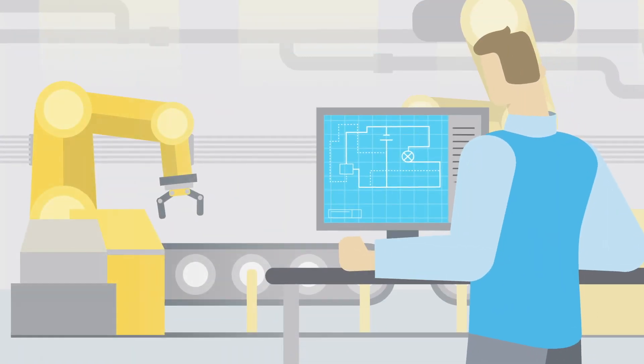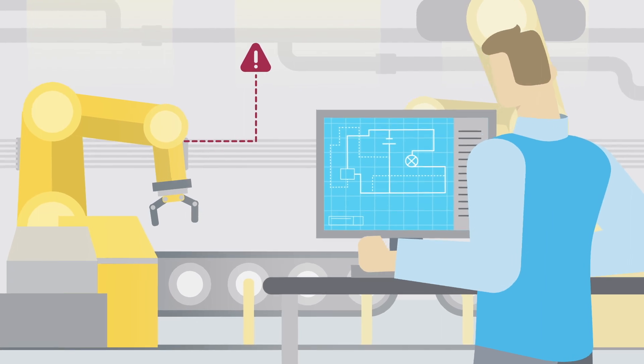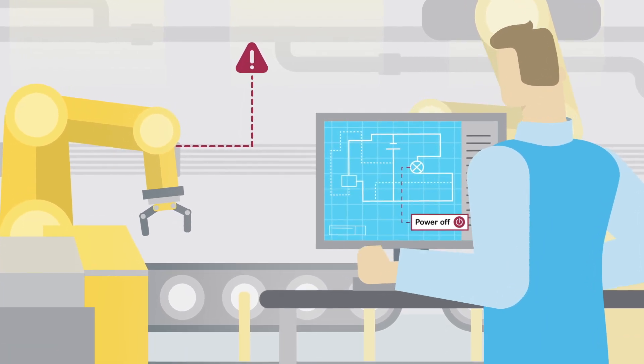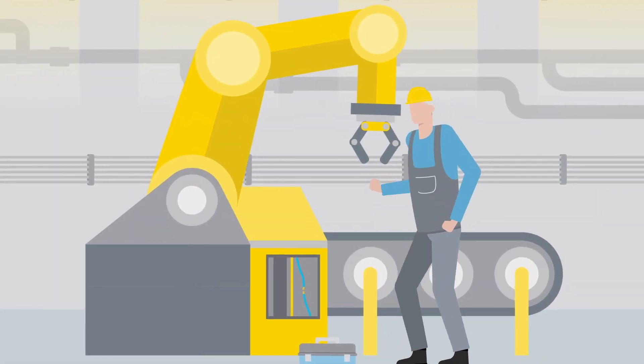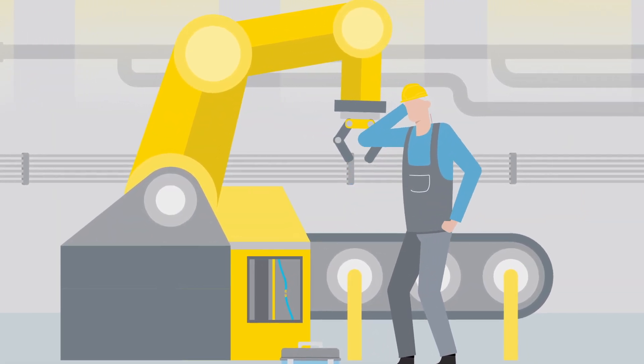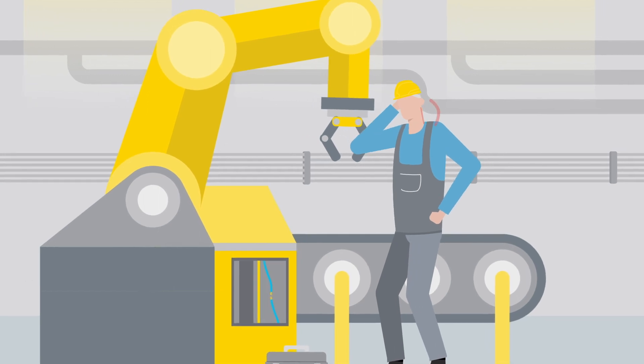For example, switching off the wrong device or part of the system causing a production shutdown. At worst, an operator can start working on a live part of the system, inaccurately represented in the technical drawing, leading to injury and fatality.